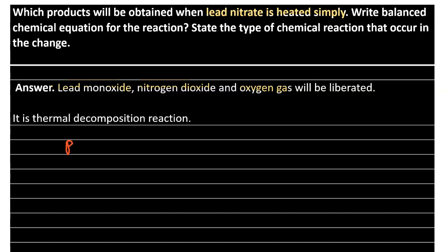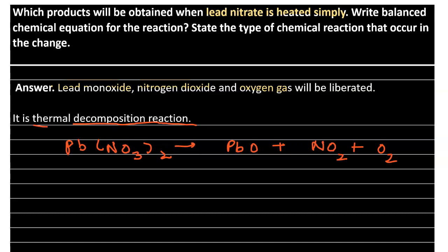The formula for lead nitrate is Pb(NO3)2. On heating, it decomposes to give lead monoxide (PbO), nitrogen dioxide (NO2), and oxygen gas (O2). Since a single reactant decomposes into three products, this is a decomposition reaction. And since it takes place on heating, we call it a thermal decomposition reaction.